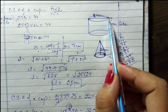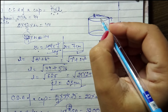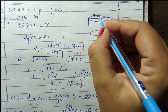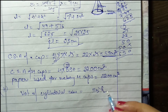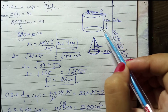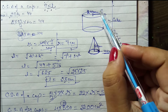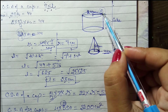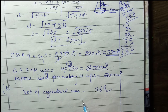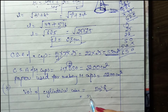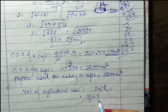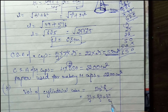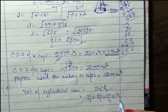r is the radius of cylindrical cake. Humein cylindrical cake ka diameter de rakha hai, toh radius kitna hoga? Diameter ka half radius hota hai, that is 24/2. And h is the height — height is cake ki 14 cm hai. Radius = 24/2 and height = 14. Values put karte hain: (22/7) × (24/2) × (24/2) × 14.